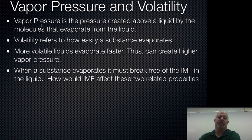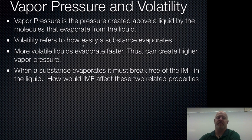So if you can create a lot of vapor pressure, you're going to be very volatile. If you evaporate really quickly, you can create a lot of pressure from the gas, which means you're evaporating fast — so you're a volatile liquid.